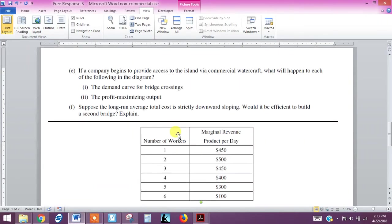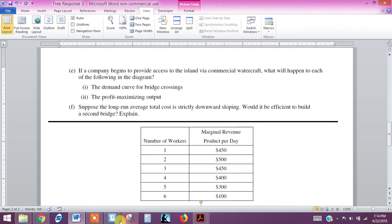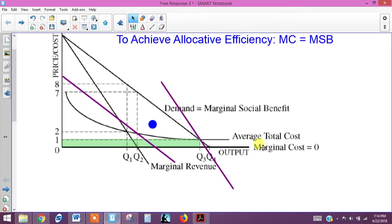Last part on question one, question F. Suppose the long-run average total cost is strictly downward sloping. So this is not what you're used to seeing here. You're used to seeing a U-shaped long-run average total cost. But in this case, with this unique example of a bridge, they're saying that the long-run average cost is strictly downward sloping. Let me go back here. Let me get this out of the way so we can see it.